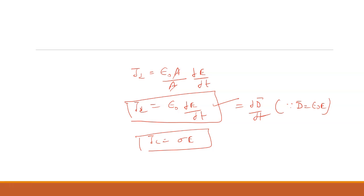So, the conduction current density depends upon the electric field, but the displacement current density depends upon the rate of change of electric field. This is basically the concept of displacement current and the difference between the conduction current and the displacement current. The current that passes through the capacitor is known as the displacement current.